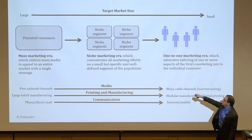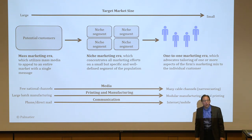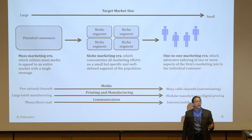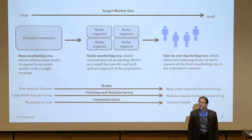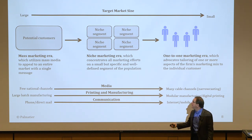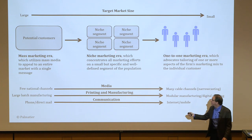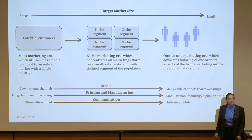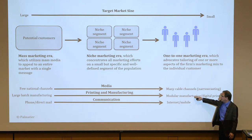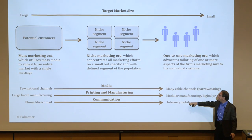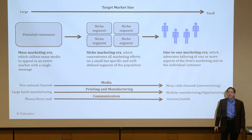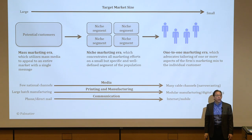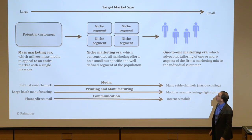We've seen an evolution from mass marketing. Companies like Coca-Cola, Procter & Gamble, and Unilever say they do no mass marketing now — mass marketing is dead. People still do niche, and we're moving into one-to-one. As manufacturing technology can support it, we'll see more and more one-to-one marketing. In each case, the target market gets smaller and smaller.